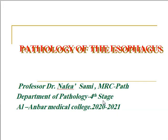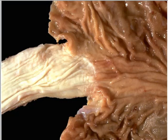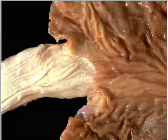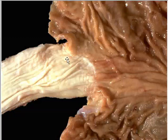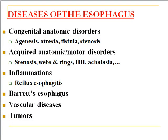We will start our lecture on pathology of the esophagus as part of the GIT pathology series. This is the gross appearance of the esophagus and stomach — the esophagus appears white on the left, while the stomach appears brown on the right. The difference in color is related to the lining epithelium: the esophagus is lined by stratified squamous epithelium and the stomach by mucin-secreting glandular structures, with a boundary at the cardia.